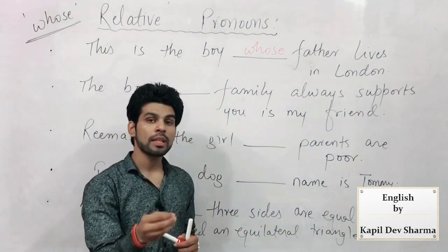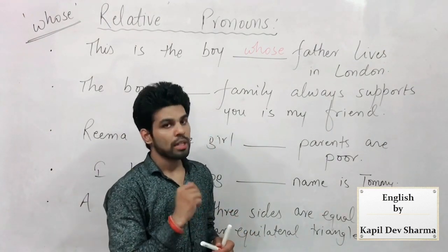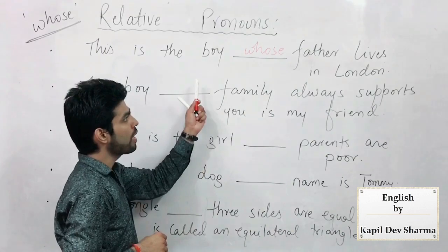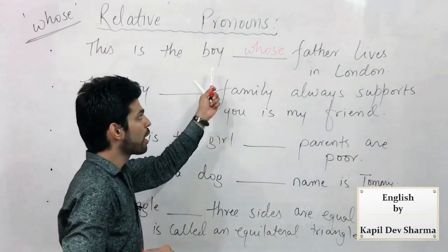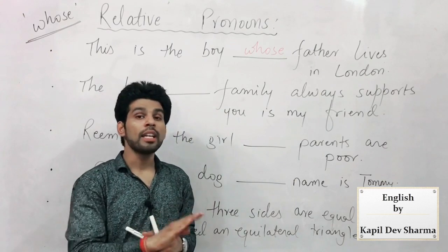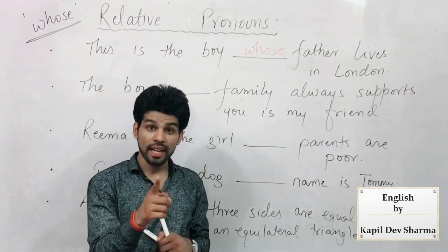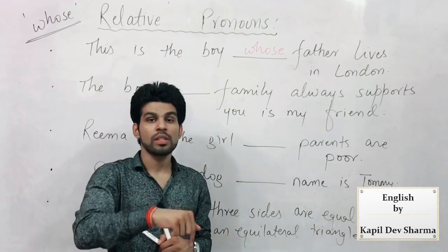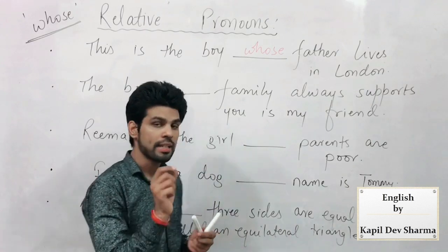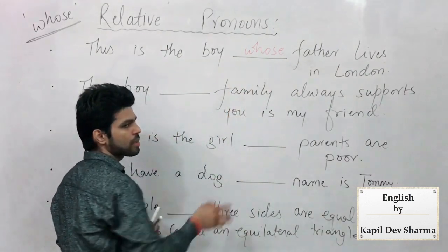In Hindi: 'voh ladka jiske maa-baap ya pita London mein rehte hain, voh mera dost hai' — something like that. So: 'This is the boy whose father lives in London.' I repeat — boy here is not a subject; no action is done by boy. Boy here is not an object; no action is coming upon that boy. 'Which' cannot come for boy. But yes, the boy's right is being talked about — his father, his family, anything belonging to him. In terms of position, we say 'whose': 'the boy whose father' — possessive case as a relative pronoun.